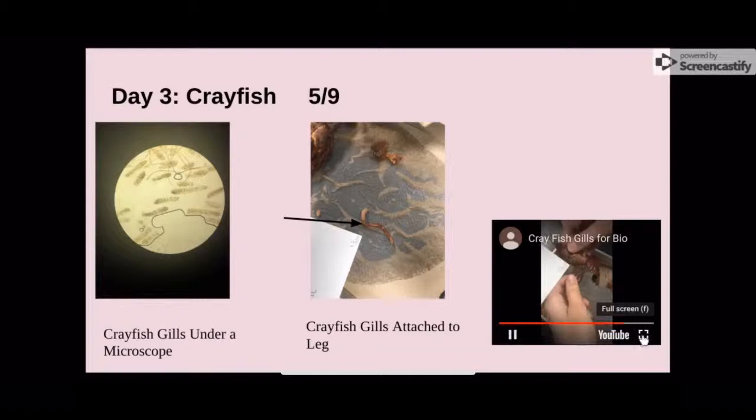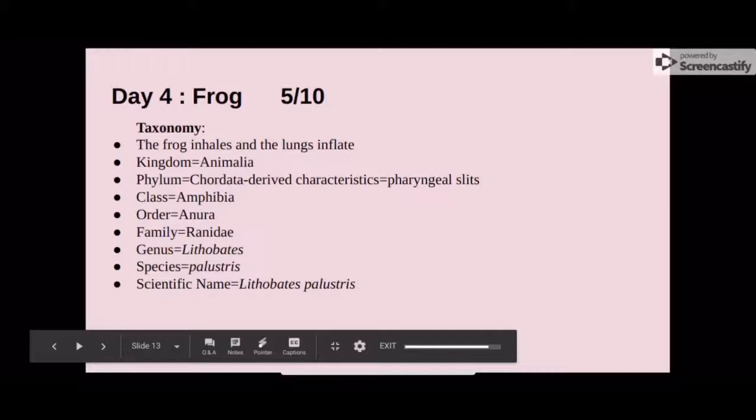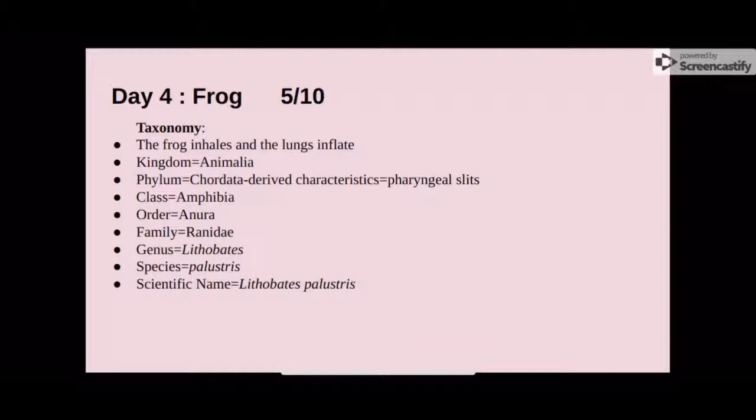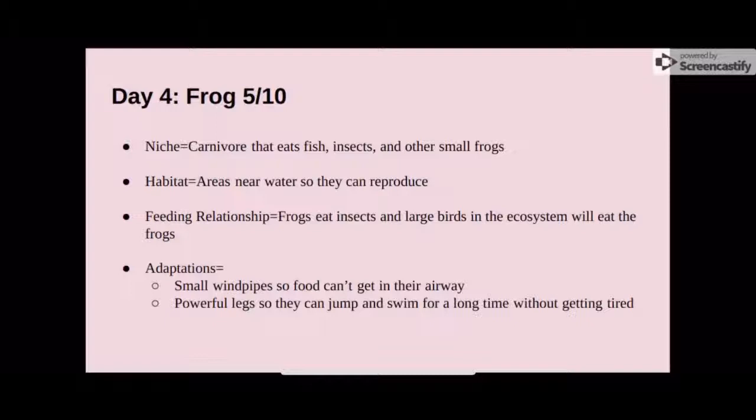The fourth organism that we dissected was the frog. Its derived characteristic is the pharyngeal slit, and its scientific name is Lithobates palustris. The frog's niche is that it is a carnivore that eats fish, insects, and other frogs. The habitat of the frog is areas near water, so they can easily reproduce. Its feeding relationship is that it eats insects, and large birds in the ecosystem will eat the frogs.